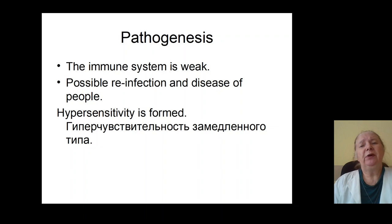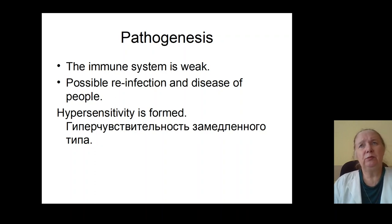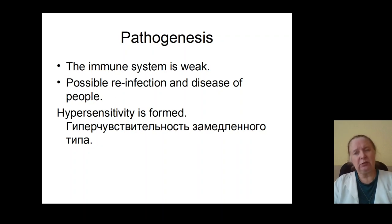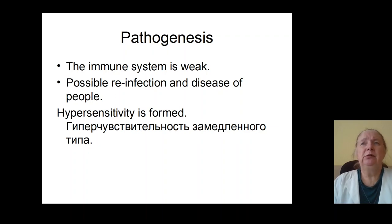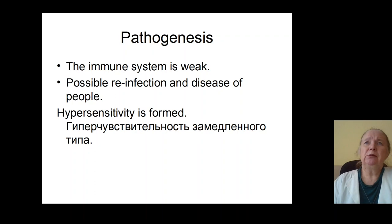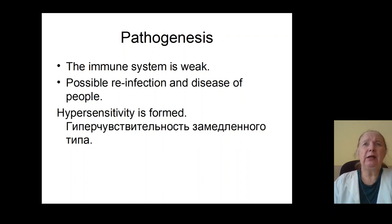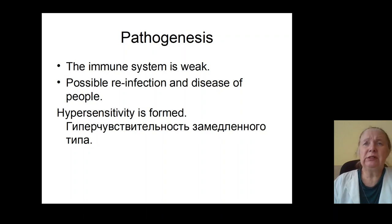Weak immune response and weak phagocytosis cause formation of reinfection and hypersensitivity immune response. Symptoms of immune complexes cause destruction of target organs and formation of alveolitis, myocarditis, nephritis. More often we indicate destruction of connective tissue and formation of arthritis, myositis, destruction of nerve endings, formation of polyradiculopathy, paralyses, and destruction of genital organs — endometritis, salpingo-oophoritis, and prostatitis.